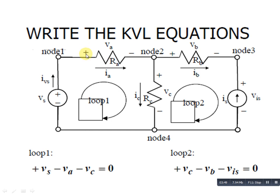The same procedure is followed for loop 2. Plus sign is considered as minus, so the voltage across this resistance is vb, giving minus vb. For the current source, the voltage is vis; the plus sign is taken as minus because current flows in the clockwise direction, giving minus vis. Current flows upward through this element, so vc has a minus sign taken as positive, giving plus vc. Note that this resistance is common to both loop 1 and loop 2. This is the complete method for creating KVL equations.